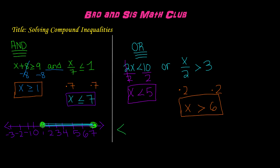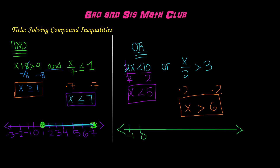Now to graph this, we must make our number line. Let's number it: negative 1, 0, 1, 2, 3 — this number line will end at 8. Now let's plot the points. We have x is less than 5, which is an open circle at 5. And x is greater than 6, which is also an open circle at 6.